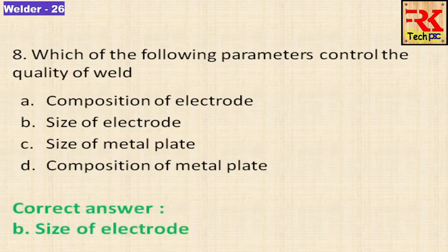The electrode diameter determines the current. These two elements — electrode size and current — are the parameters that control the quality of the weld.